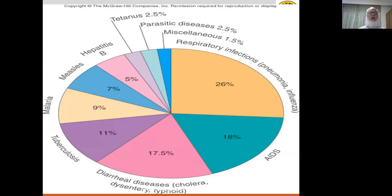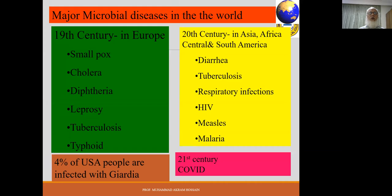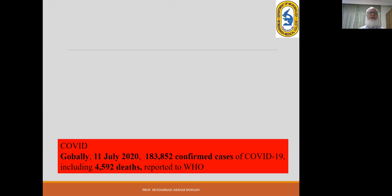From COVID, 1.2 crore were infected, of which 5.5 lakh died. The graphical representation of infectious diseases shows that respiratory infections are the most common, followed by diarrheal disease and tuberculosis. COVID is also a respiratory pathogen. Major microbial diseases vary in different centuries, and in the 21st century this is COVID.